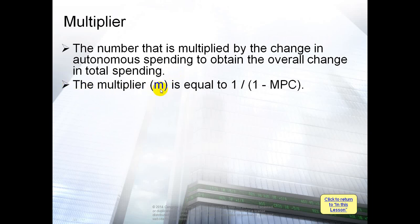The multiplier M — the symbol for the multiplier — is equal to 1 over (1 minus MPC), where MPC is the marginal propensity to consume. So M = 1 / (1 - MPC). This is the formula of the multiplier and how we calculate it.